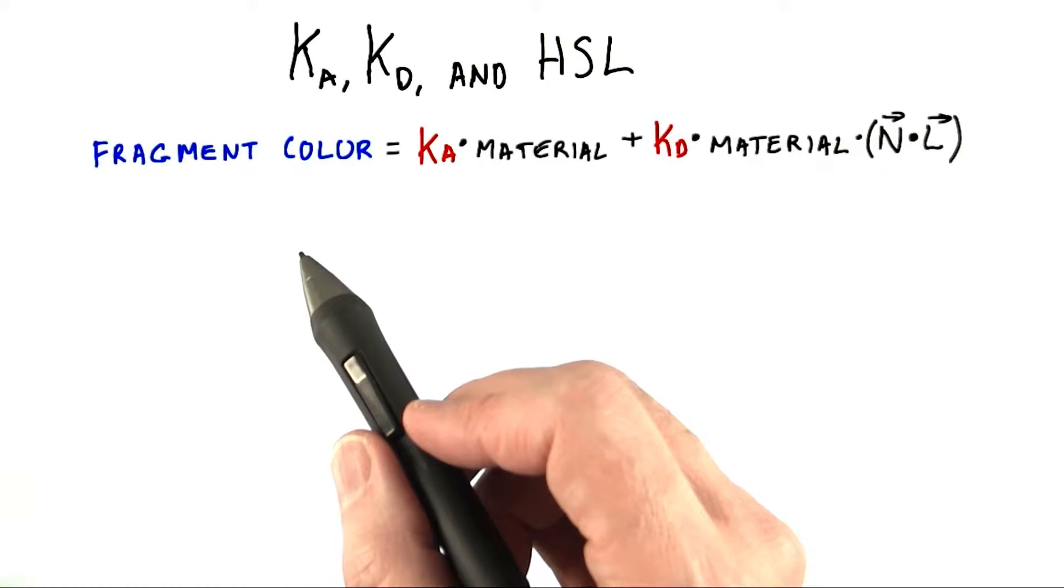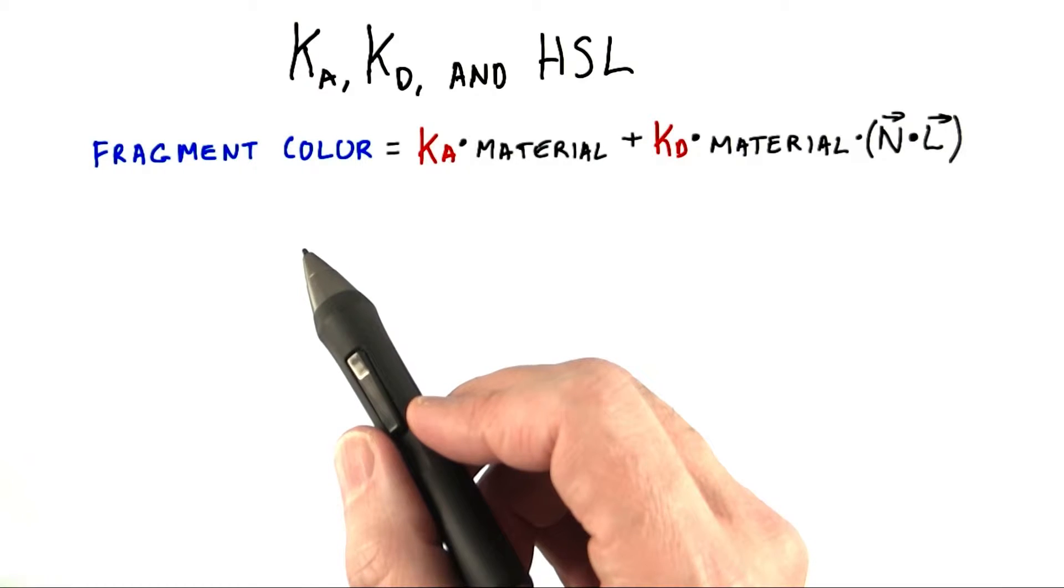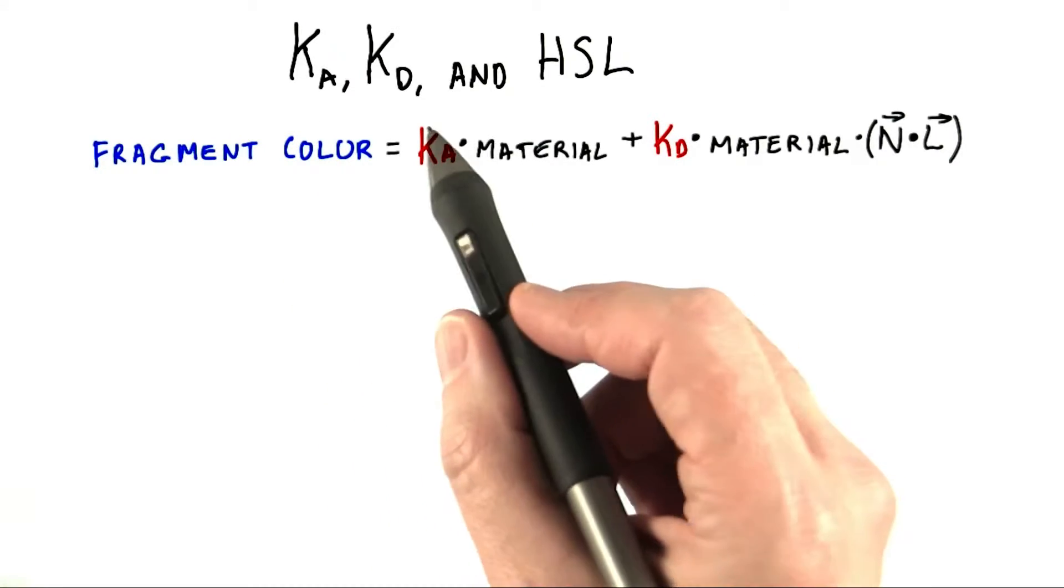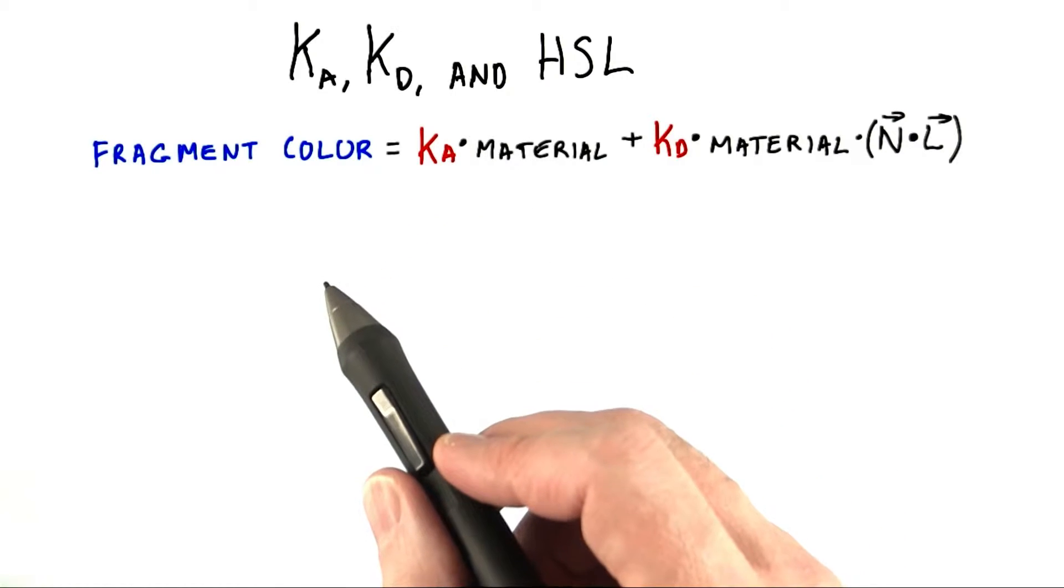These are simply numbers used to scale the effect of the ambient and diffuse contributions up and down. Ka is the grayscale level of the ambient light, and kd is a handy way to modify the diffuse contribution.